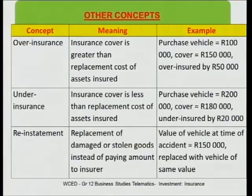Generally insurance companies stick to the market value. Under-insurance is quite the opposite — it's when you actually insure something for less than what the replacement cost would be. So for argument's sake, if we took a house bought for 2 million Rand, and we decided to insure that house for 1.8 million Rand, we would be insuring it for less than what we actually bought it for, which means that we would be under-insuring it.